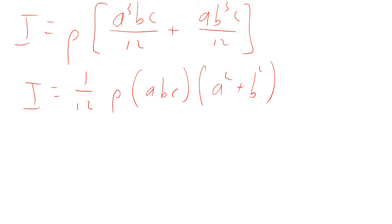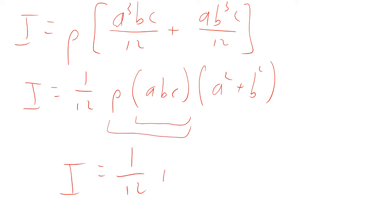Our i now looks like rho times a cubed b c over 12 plus a b cubed c over 12. I can rewrite this as one twelfth times rho times a b c times a squared plus b squared. Now a times b times c — length times width times height — is volume. Volume times density is mass. So this comes out to be one twelfth times mass times a squared plus b squared.